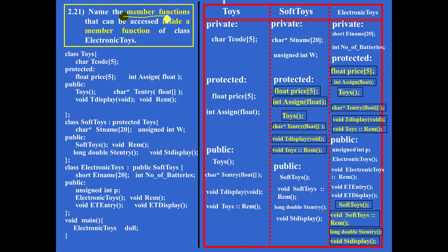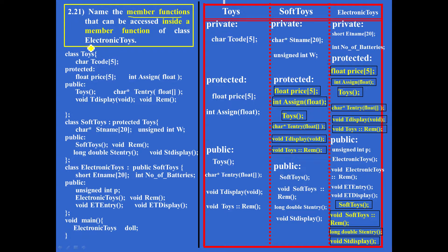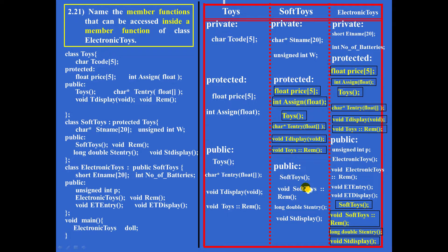Question 2.21: Name the member functions that can be accessed inside a member function of class electronic toys. Inside a member function means the whole class. So all member functions of class electronic toys are: int assign float, char start entry of float, void T display void, remarks of class toys, remarks of class electronic toys, void ET entry, void ET display, remarks of class soft toys, long double ST entry, and void ET display. Constructors are excluded.